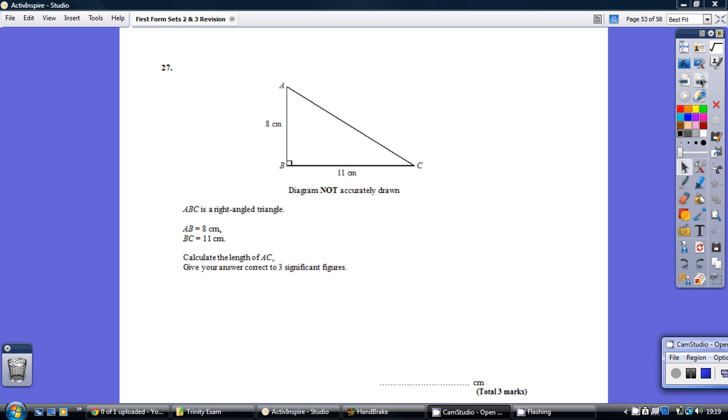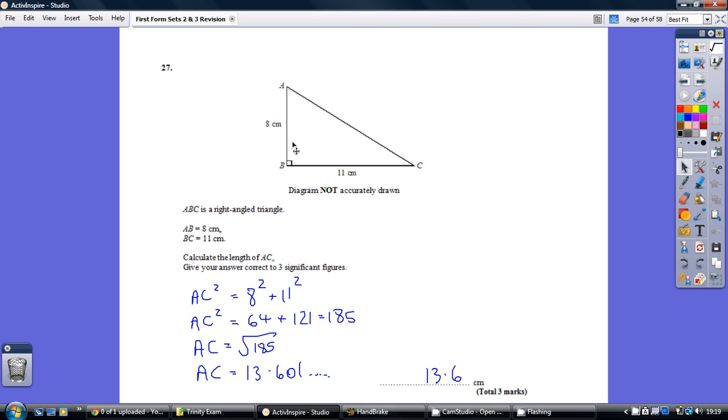Question 27, have a go. Okay, so we've got a right-angled triangle, we know two sides and we're trying to work out the length of the third side and there's no reference to any of the other angles. So you've got to spot that this is a Pythagoras question.